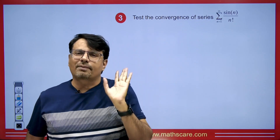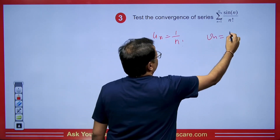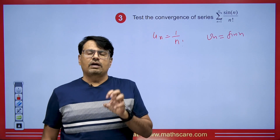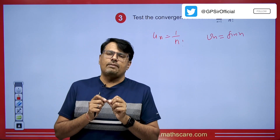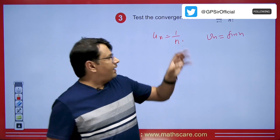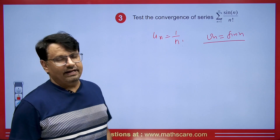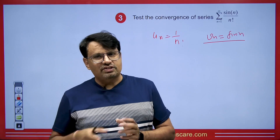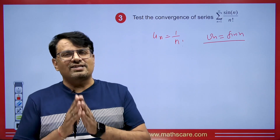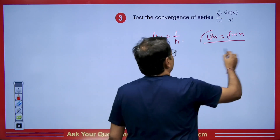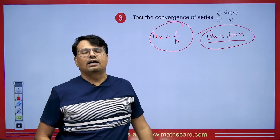In this question, we need to test convergence of summation sin(n)/n!. Neither sin(n) nor 1/n! gives a convergent series on its own in this product context, so we apply Dirichlet's theorem. We take un = 1/n! and vn = sin(n). Then un = 1/n! is monotonically decreasing and tends to 0 as n → ∞. For vn = sin(n), its partial sums are bounded since the range of sine lies between −1 and 1. Since un is monotonically decreasing tending to 0 and the partial sums of vn are bounded, by Dirichlet's theorem their product series is convergent.